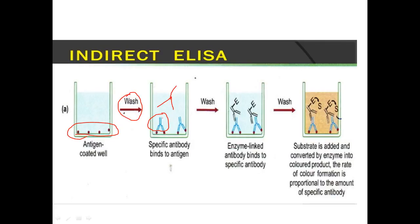We wash the microtiter plate again with buffer solution. Then we add the secondary antibody, which is also called the anti-immunoglobulin. After adding the secondary antibody, we wash it again. One important point: there is an 'E' shown in the diagram, which symbolizes the enzyme that is conjugated or attached with the secondary antibody.